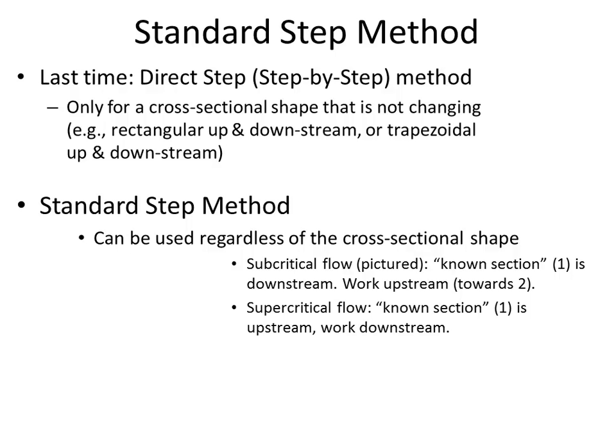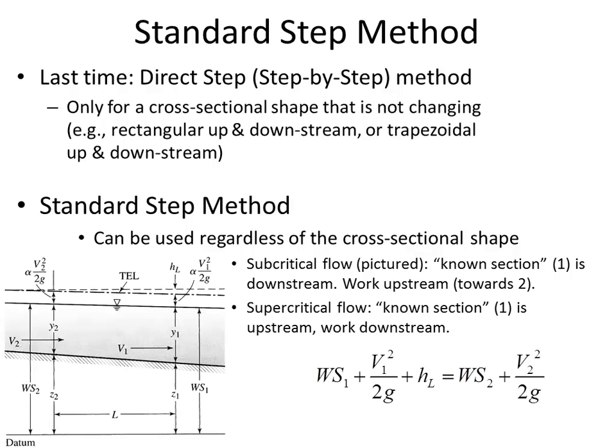There is a change in definitions: previously, one and two meant upstream and downstream respectively. Here in the standard step method, one means the known location and two means the unknown location. Sometimes what we know is upstream, sometimes downstream. If we have subcritical flow, we work upstream; if supercritical, we work downstream. The key point is that location one is where you know the depth, and location two is what you're solving for.